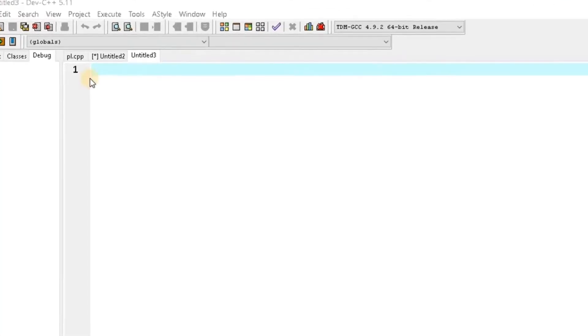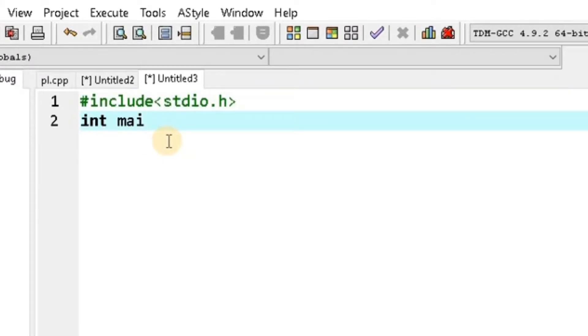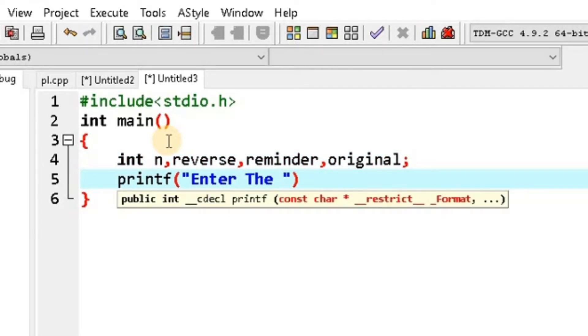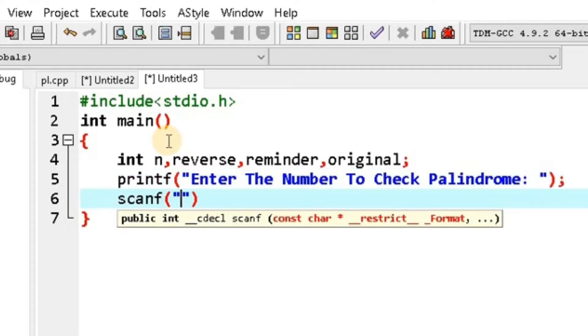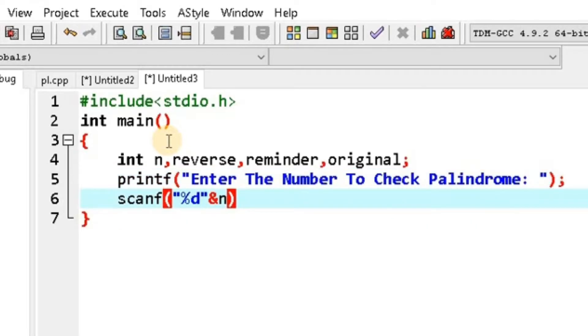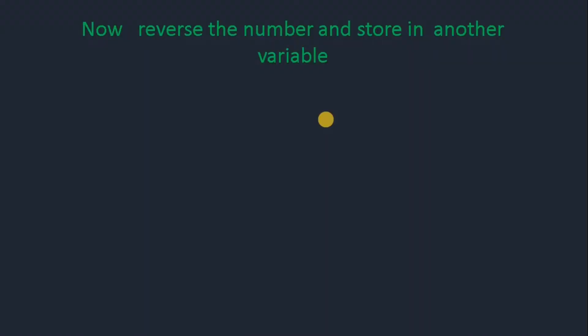We will write the preprocessor, main function, and declare some variables that we will use in the program. After that, printf will print 'enter the number to check the palindrome,' and scanf will ask the user to input the integer value.